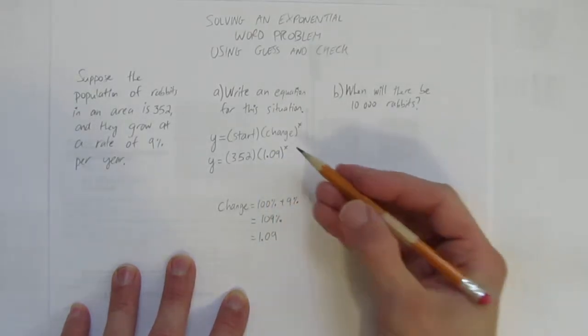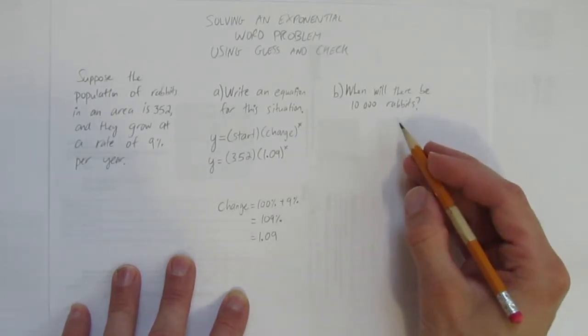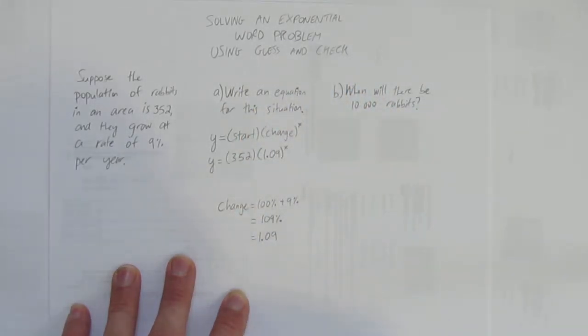Great, well we've got our equation. Trickier though is when will there be 10,000 rabbits? This is the video title, Solving by Guess and Check.